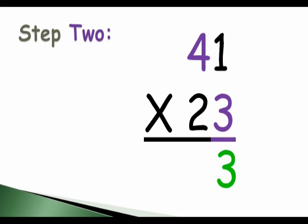In step two, the numbers that we multiply are purple. So we will multiply 3 by 4 and the answer is 12. We will write the 12 next to the green 3. So far, we have multiplied 41 times 3 and the answer is 123.